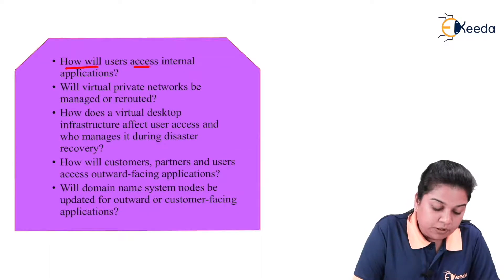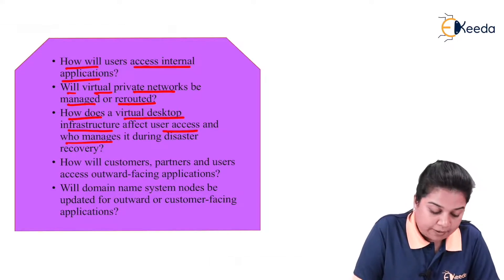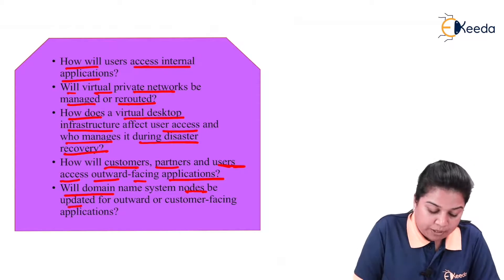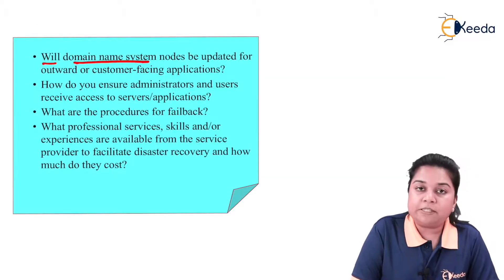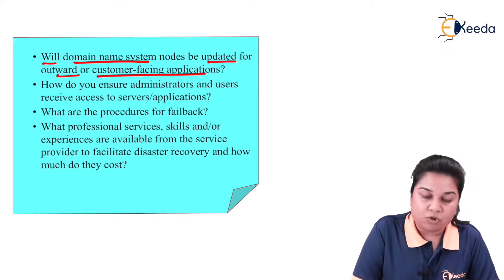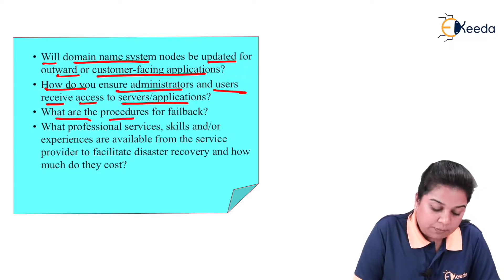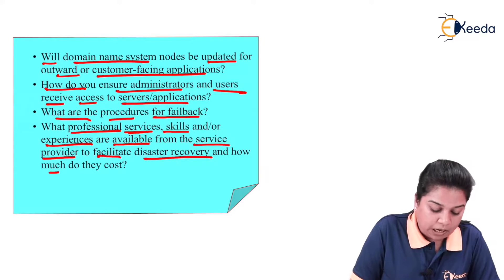Further questions include: How will users access internal applications? Will virtual private networks be managed or rerouted? How does a virtual desktop infrastructure affect user access and who manages it during disaster recovery? How will customers, partners, and users access outward-facing applications? Will domain name system nodes be updated for outward or customer-facing applications? How do you ensure administrators and users receive access to servers and applications? What are the procedures for failback?